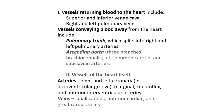The vessels returning to the heart include the superior and inferior vena cava to the right, and then the right and left pulmonary veins come into the left side of the heart. The vessels conveying blood away from the heart include the pulmonary trunk and the ascending aorta.